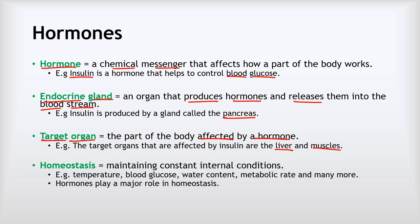Lastly, we're going to talk about the idea of homeostasis. This is about maintaining constant internal conditions inside the body, and it's super important. There are lots of different conditions in the body that need to be kept constant or at least within a narrow range — for example, temperature, blood glucose, water content, your metabolic rate, and many more things besides that. Hormones play a major role in homeostasis. So let's meet some of the different hormones and endocrine glands that we'll be talking about.